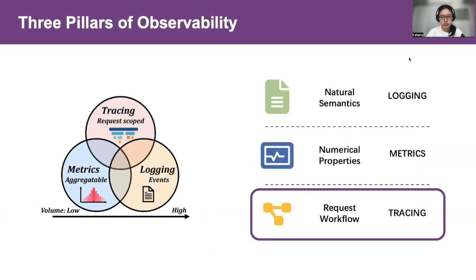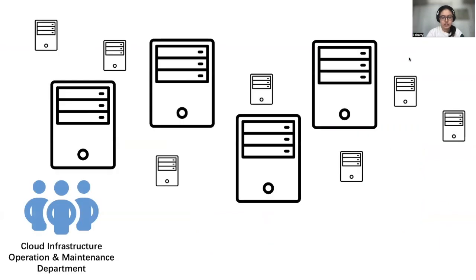Among them, logging focuses on natural semantics, metrics are the derived numerical properties, and tracing records the end-to-end journey of every user's request, which is especially helpful under these new scenarios. Let's check out an example to see how tracing differs itself from the other two pillars, and what the limitations of existing tools are.